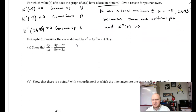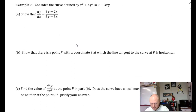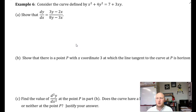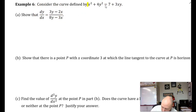Let's see how implicit differentiation ties into this idea. We'll do a warm-up and refresher on implicit differentiation. Consider the curve defined by x squared plus 4y squared equals 7 plus 3xy. They want us to show that dy/dx is equal to 3y minus 2x over 8y minus 3x. They give us the curve, they give us the derivative — they just say show it. So I'm going to implicitly differentiate and that should match.